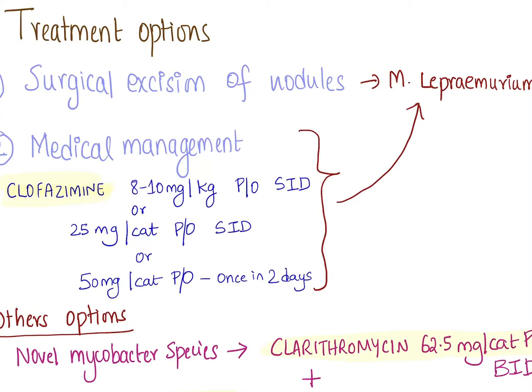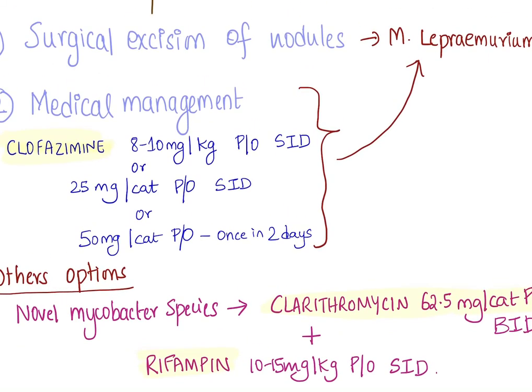There are a few medicines. One is clofazimine — you can administer it at the dose of 8 to 10 mg per kg once a day, or 25 mg per cat per os once a day, or 50 mg per cat per os once in two days. You have to continue this medication for months even after the lesions have been clinically subsided and even after the cytology comes negative for acid-fast bacilli. The other option is clarithromycin 62.5 mg per cat per os twice a day, and you have rifampin 10 to 15 mg per kg per os once a day.